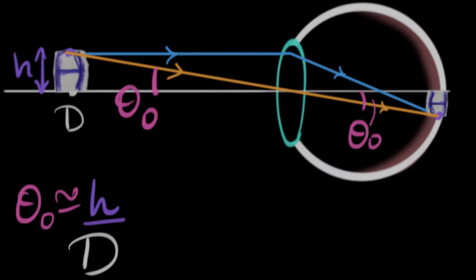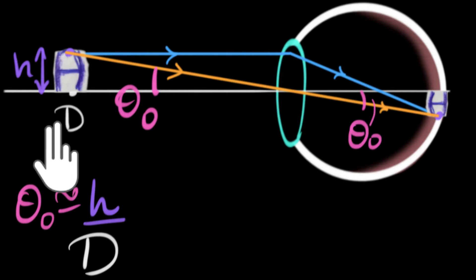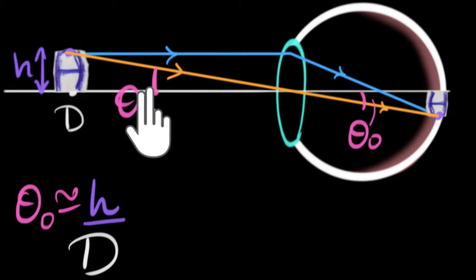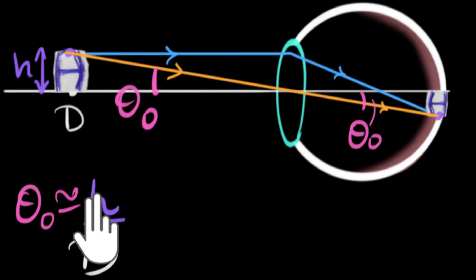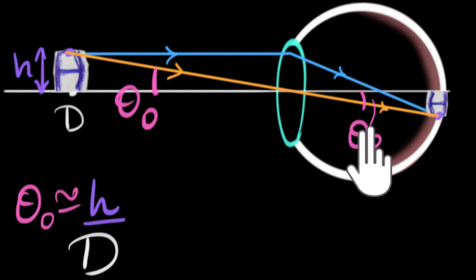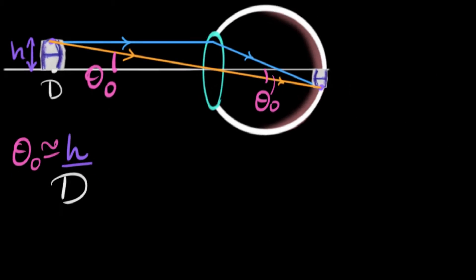For a naked eye, the biggest sharp image on the retina is formed when the object is kept right at the near point, and the angle subtended is given as the height of the object divided by the near point distance. If we go any closer, the angle increases and the image size increases but it gets blurred.